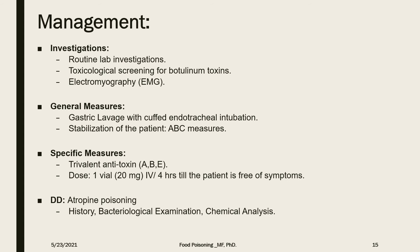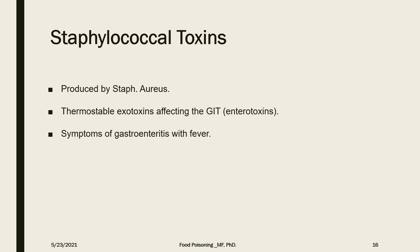The antitoxin is usually given intravenously until the patient is free of symptoms. A common differential diagnosis for botulinum toxin poisoning is atropine poisoning; differentiation is made through history, bacteriological examination, and chemical analysis. Moving to staphylococcal toxins: these are produced by Staph aureus and are thermostable exotoxins that affect the GIT, which is why they are sometimes referred to as enterotoxins. Manifestations usually include gastroenteritis with high-grade fever.